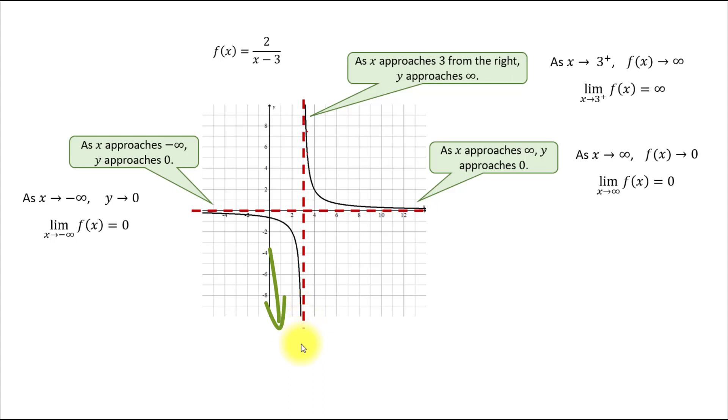And since the line continues down without bound, it means that y values approach negative infinity. And these are the two ways to say that mathematically. Notice that the fact that x approaches three from the left is denoted by a negative sign positioned to the right of three.